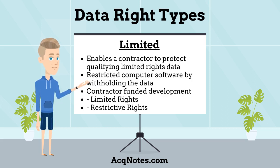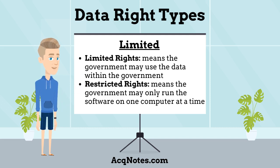The second data rights type is limited rights. Limited rights enables a contractor to protect qualifying limited rights data and restricted computer software by withholding the data from the government and instead delivering form, fit, and function data. If a contractor has funded the development of an item completely at private expense, then he may limit the government's use of technical data using limited and restricted rights. Limited rights means the government may use the data within the government but not release the technical data outside of the government, except if necessary for emergency repair or overhaul, and may not use the data for manufacturing additional quantities of the item. Restricted rights means the government may only run the software on one computer at a time, may make only the minimum copies needed for backup, but may make modifications to the software. The software may not be released outside of the government except for emergency repair or overhaul.